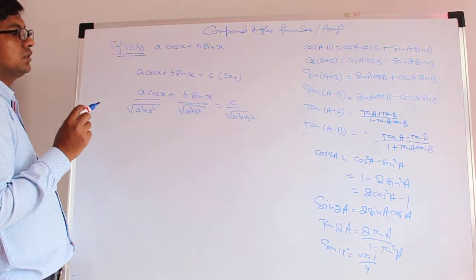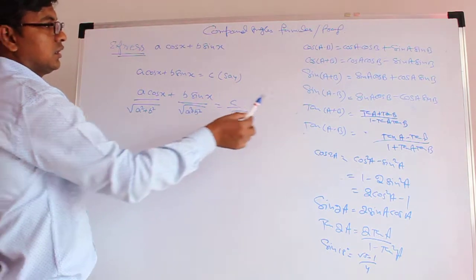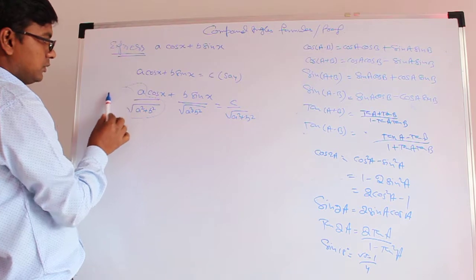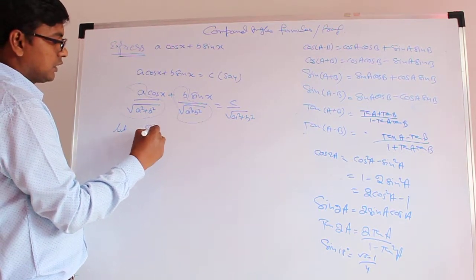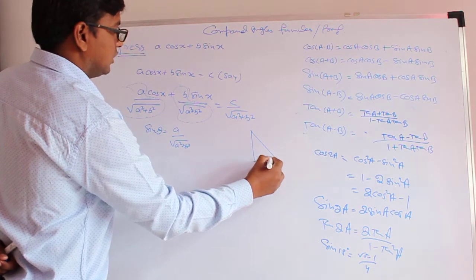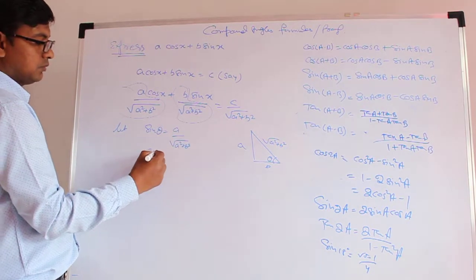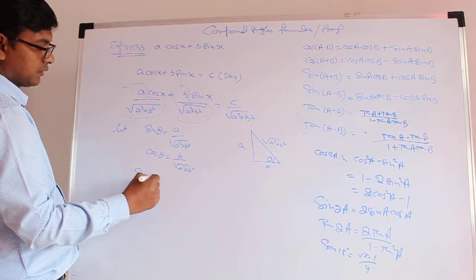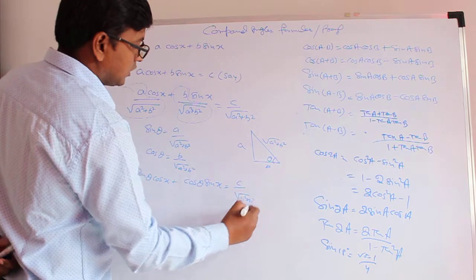Now we need to decide whether to express it in sine form or cosine form. For the sine form, we let sin θ = A / √(A² + B²). If this is θ, the perpendicular is A and the base gives B, so cos θ = B / √(A² + B²). This gives us sin θ cos x + cos θ sin x = C / √(A² + B²).